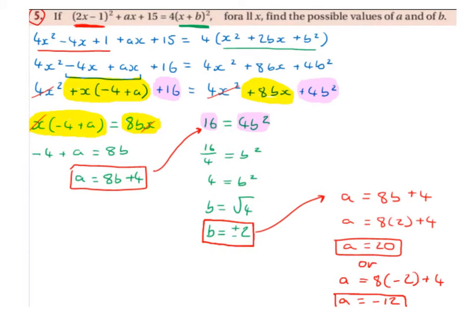Next we're going to put like to like again. So we're going to have 16 is equal to 4b squared. So the 16 and the 4b squared are the only terms that don't have x's or x squareds on them. So we're going to divide across by 4 to get the b squared on its own. So 16 divided by 4 equals b squared, so 4 equals b squared.